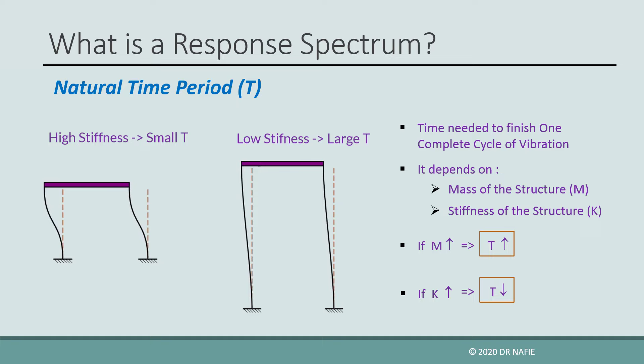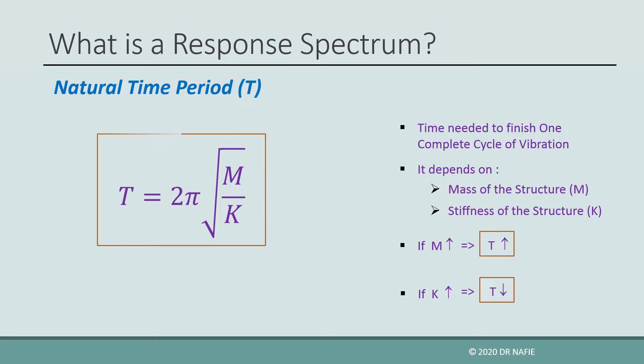For a one-story single degree of freedom system, the natural time period is equal to 2π multiplied by the square root of m over k.